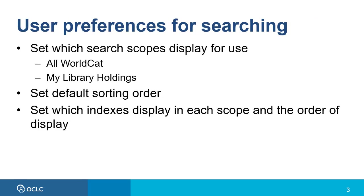First, let's take a look at the user preferences for searching WorldCat in Acquisitions. You can set preferences for which search scopes display for use. In Acquisitions, the scopes are All WorldCat and My Library Holdings, which is the WorldCat database scoped to just the records that have your library's holdings. You can also set the default sorting order, and you can set which indexes display for use in each scope and the order of the display.